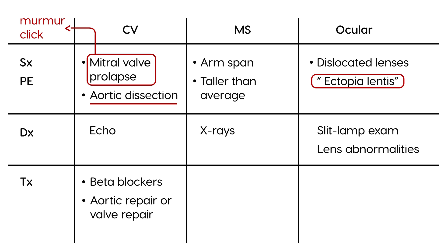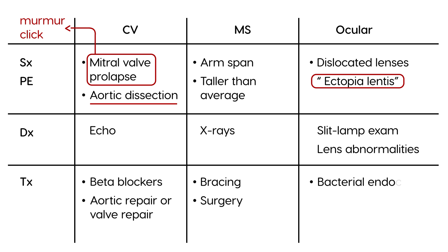The musculoskeletal abnormalities are really helped with bracing and, if necessary, surgery. Because of the mitral valve prolapse, to prevent endocarditis, you give endocarditis prophylaxis with antibiotics — bacterial endocarditis prophylaxis.